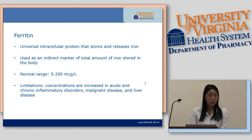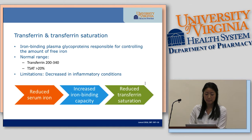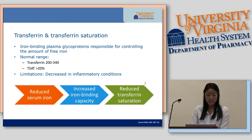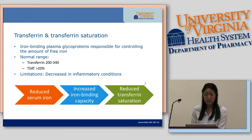The normal range for ferritin is anywhere between 5 and 200 micrograms per liter, but a limitation is that concentrations are increased in acute and chronic inflammation, as well as in malignant disease and liver disease. Transferrin is an iron-binding plasma glycoprotein responsible for controlling the amount of free iron, with a normal range of about 200 to 340. When you have a reduced serum iron concentration, you actually increase your iron-binding capacity, which is why you have a reduced transferrin saturation. A limitation is that transferrin saturation is decreased in inflammatory conditions.